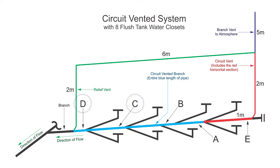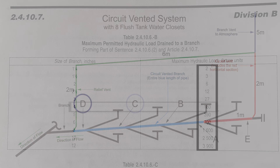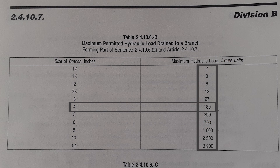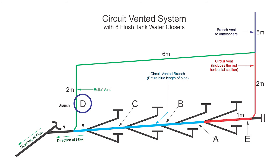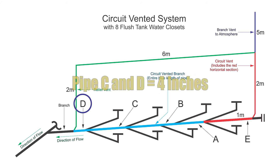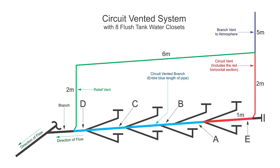For pipes C and D, let's look at our branch table. We're already at 4 inches and we can't go smaller — we can handle 180 fixture units on 4-inch pipe. At pipe D we have only 32 fixture units, so we're going to be 4 inches for the rest of the way.